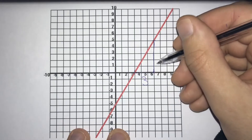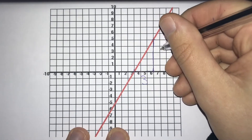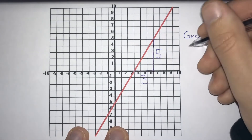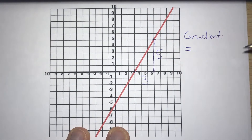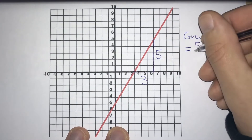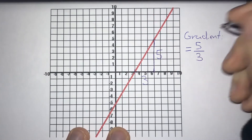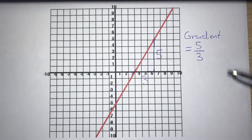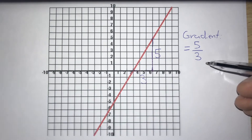And how far up have we gone? We've gone 1, 2, 3, 4, 5. So our change in y is going to be equal to 5 and our change in x is going to be equal to 3. We get a gradient of 5 over 3. We can leave this as a fraction, otherwise we'll end up getting some recurring decimals that aren't so nice. We'll just leave it as this fraction, 5 over 3.